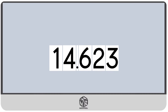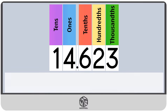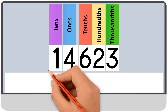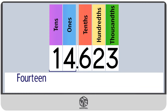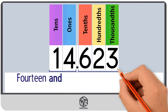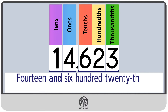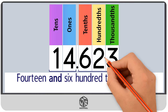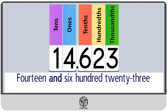Let's do another example. 14.623. First, we write the whole number part: 14. Instead of the decimal point, we write the word AND. Now we write the decimal part: 623. Lastly, we take a look at the place value of the last digit. The last digit is 3, and it's in the thousandths place. So we write 14 and 623 thousandths.